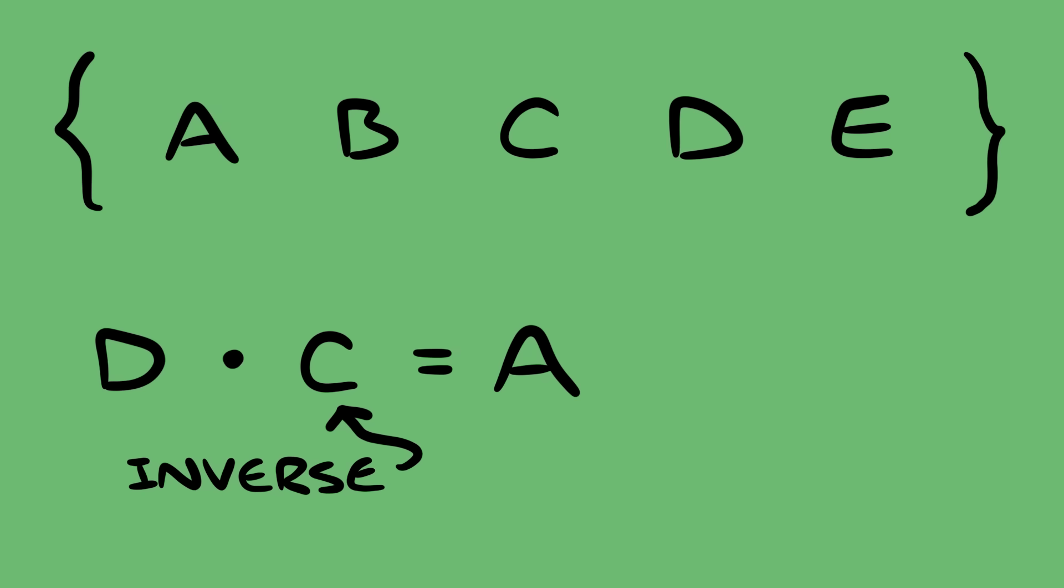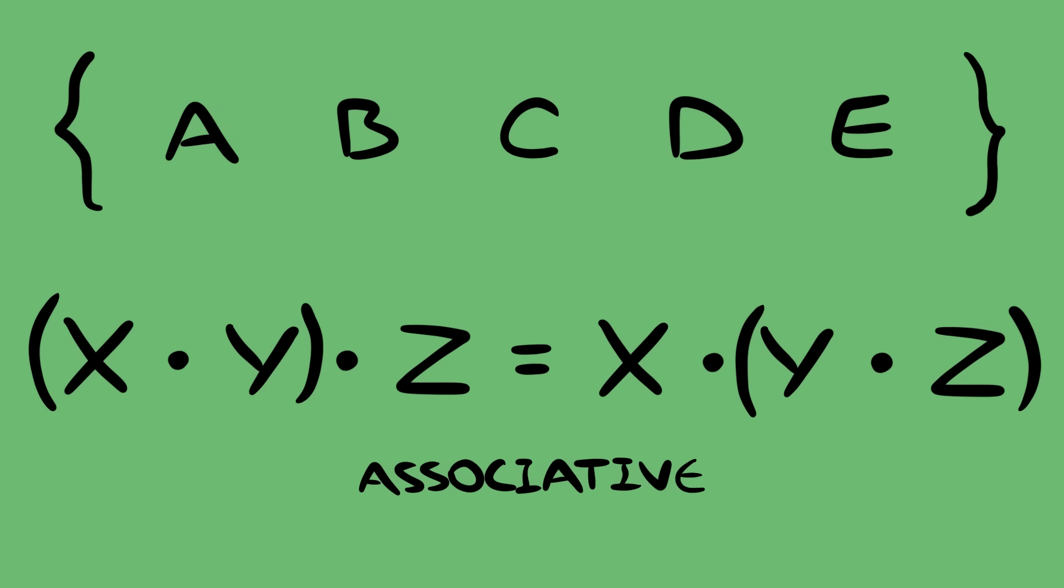Finally, one last little property of composition. It's associative, just like addition and multiplication, like how you learned in elementary school.